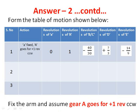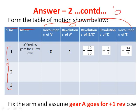Moving to the table of motion: as stated in the last video, three rows and two columns remain the same. The number of additional columns depends on the number of elements. Since we have 5 elements, we have 5 columns: first for the arm, second for gear A, third for compound drive BC, fourth for gear D, and fifth for gear E.